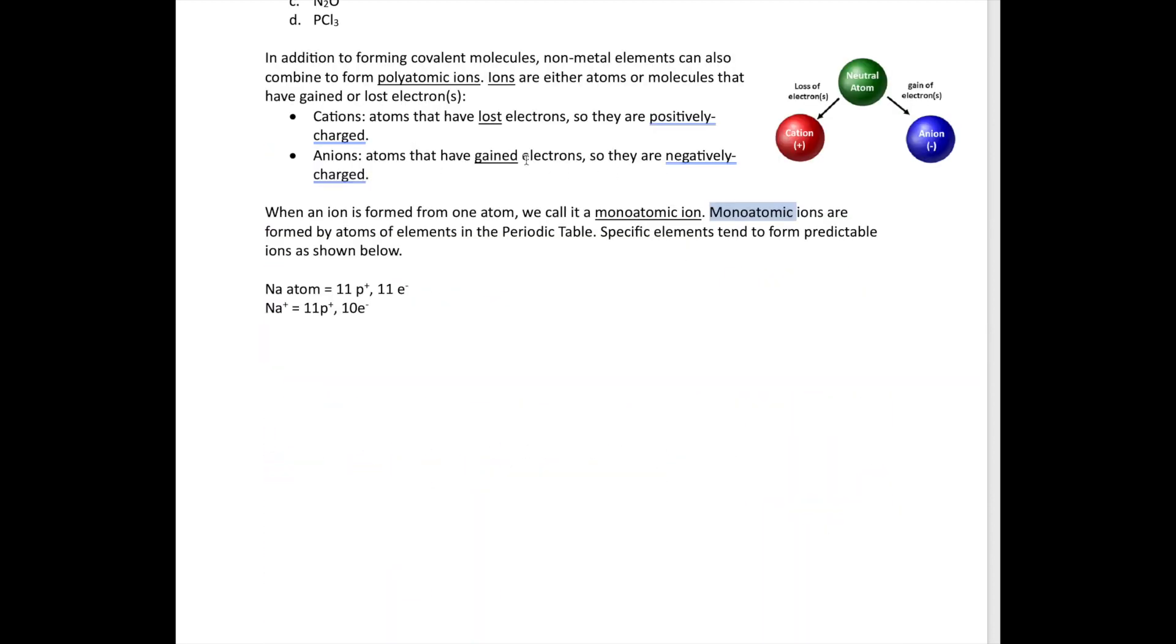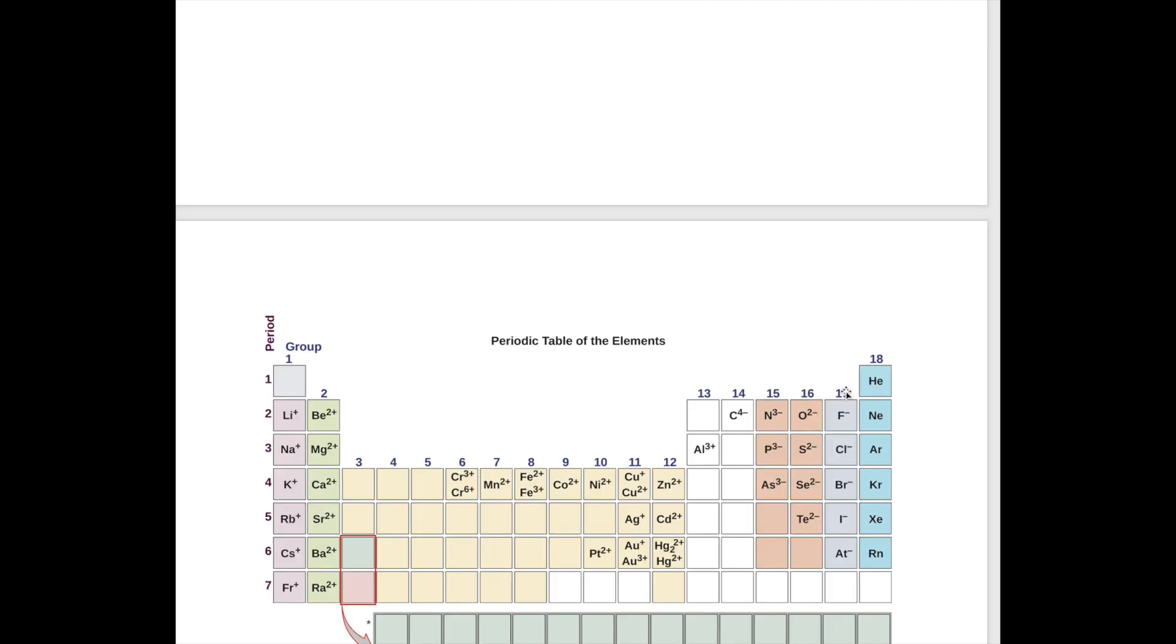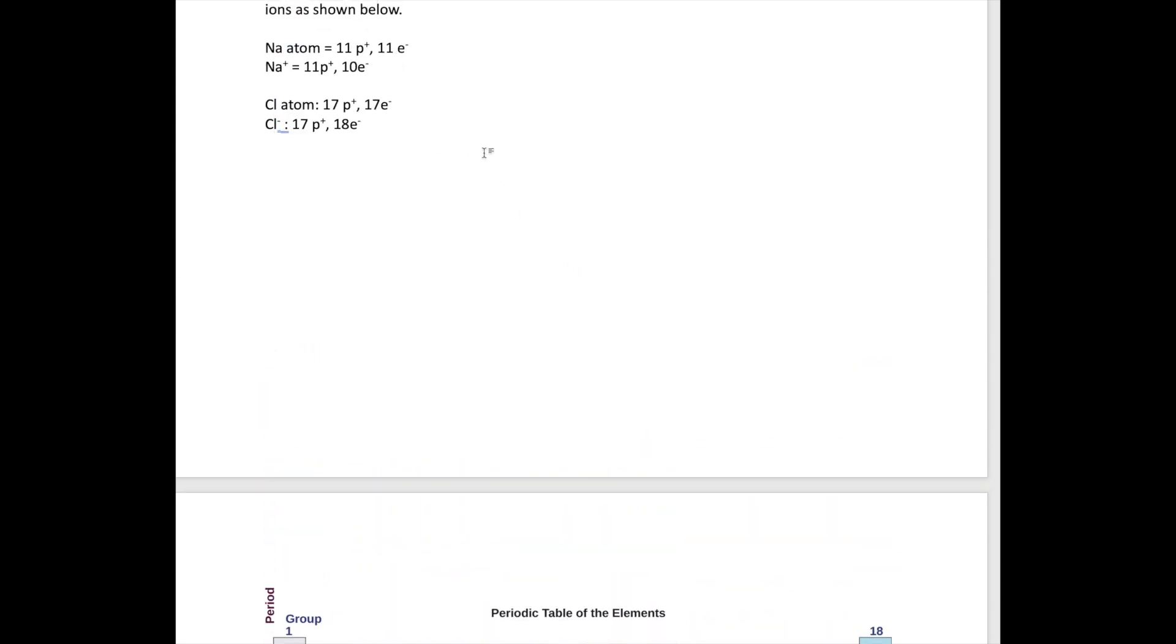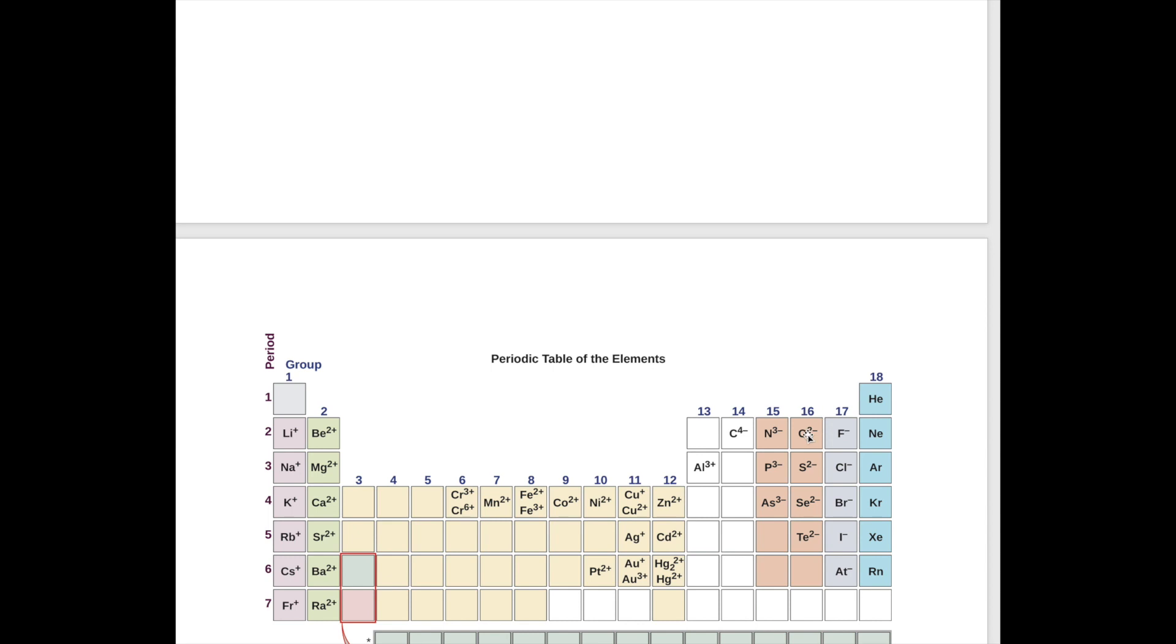With anions, they are atoms that have gained electrons. So chlorine, the atom phase, has 17 protons and 17 electrons. Chlorine, because it's a non-metal, it could accept electron. If it accepts one electron, it becomes this guy. It's an ion that has one more negative charge. So it's called Cl minus. So you see that this is Na plus. This is Cl minus. Now, once you go to group 15, 16, 17, they become anions. Non-metals tend to form anions. Metal tends to form cations.